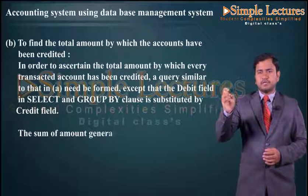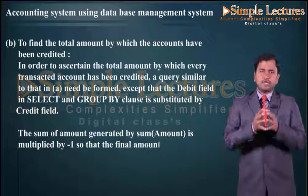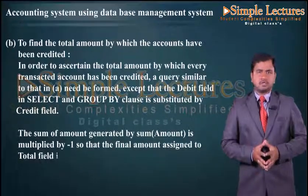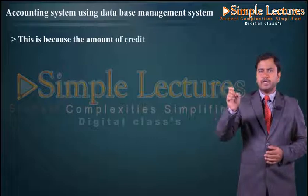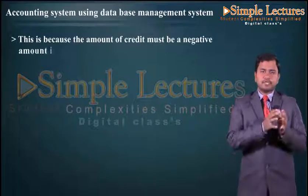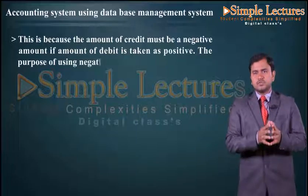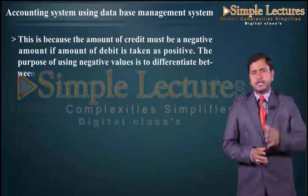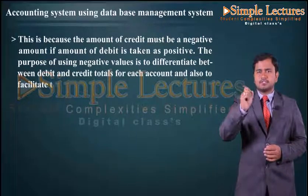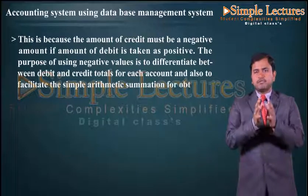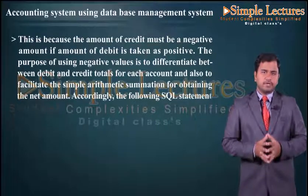The sum of amount generated by SUM is multiplied by minus one so that the final amount assigned to the total field is always negative. This is because the amount of credit must be negative if the debit amount is taken as positive. The purpose of using negative values is to differentiate between debit and credit totals for each account, and also to facilitate a simple arithmetic summation for obtaining the net amount.